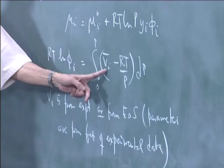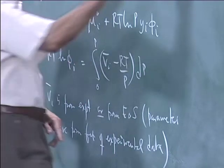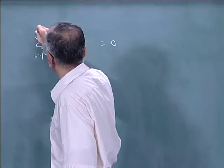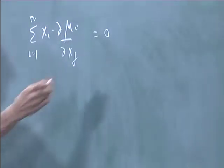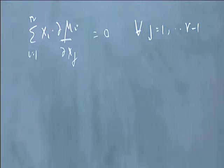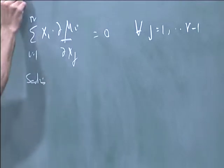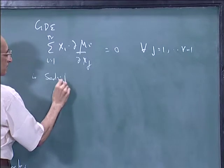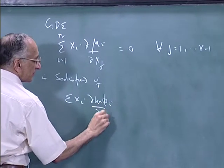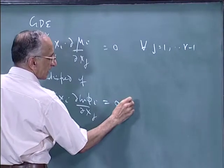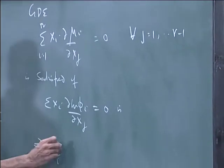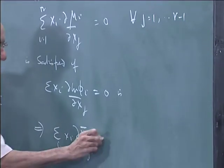RT ln phi_i will satisfy the Gibbs-Duhem equation if v_i_bar satisfies the Gibbs-Duhem equation. The Gibbs-Duhem equation is basically a linear equation, so I can go term by term. The equation is simply sum over x_i of the partial of mu_i with respect to x_j equals zero, summed over i equals 1 to R, for all j, except there are only R minus 1 independent mole fractions. The GDE is satisfied if the sum over x_i of partial ln phi_i implies sum of x_i partial of v_i_bar with respect to x_j equals zero.